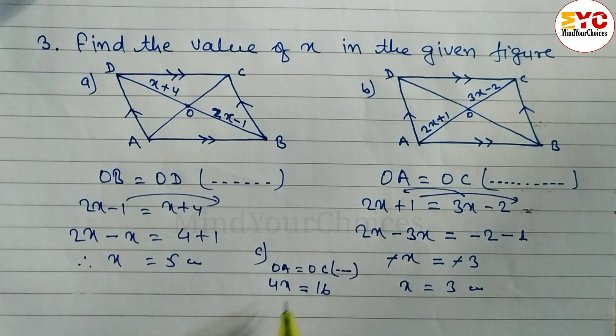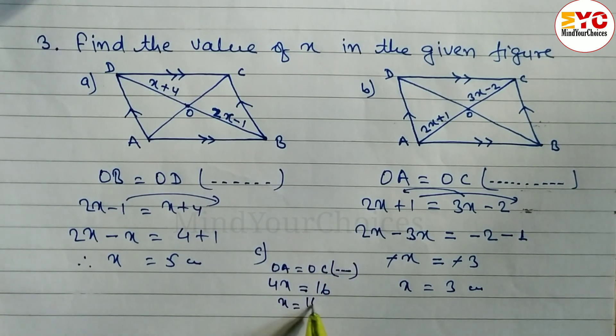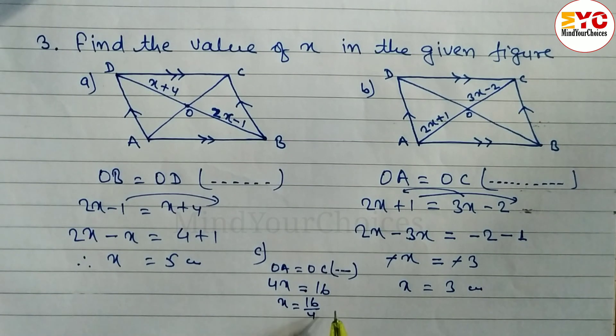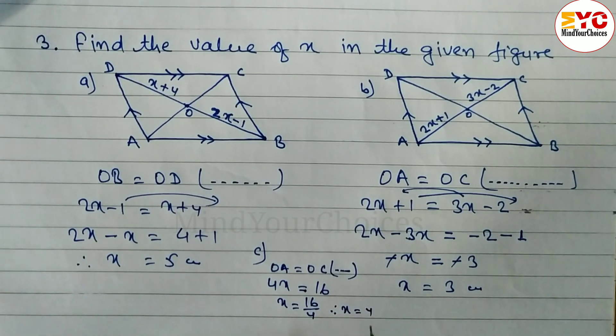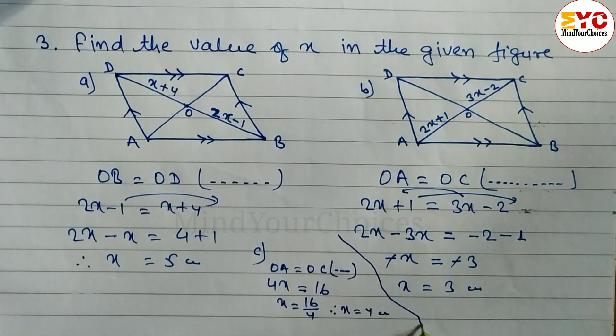Diagonals of a parallelogram bisect each other. This is multiplication, so divide. 16 divided by 4. Therefore, what we get? Value of X is equal to 4 cm is the answer.